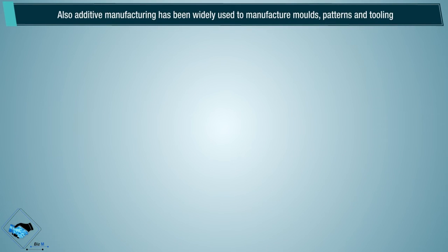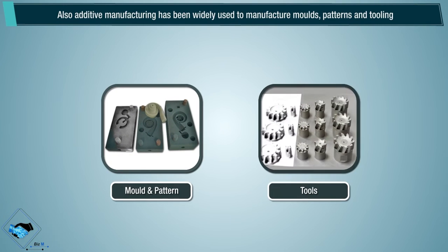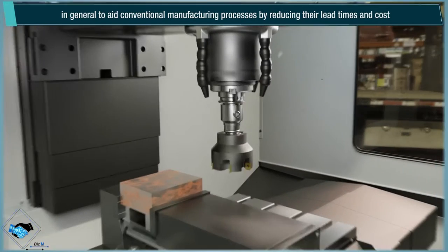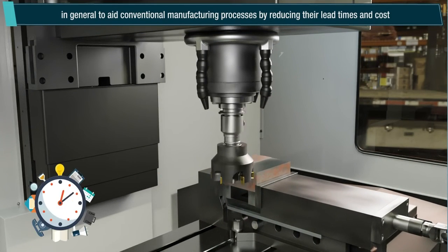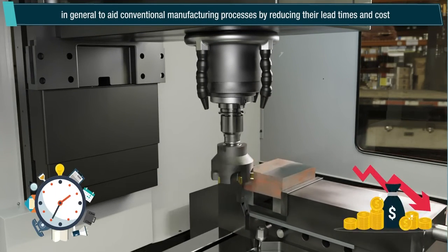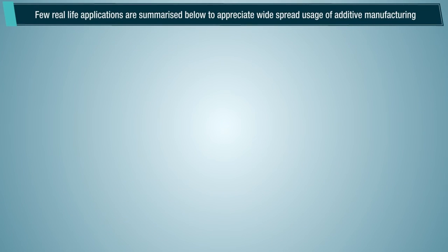Additive manufacturing has also been widely used to manufacture molds, patterns and tooling — in general, to aid conventional manufacturing processes by reducing their lead times and cost. A few real-life applications are summarized below to appreciate the widespread usage of additive manufacturing.